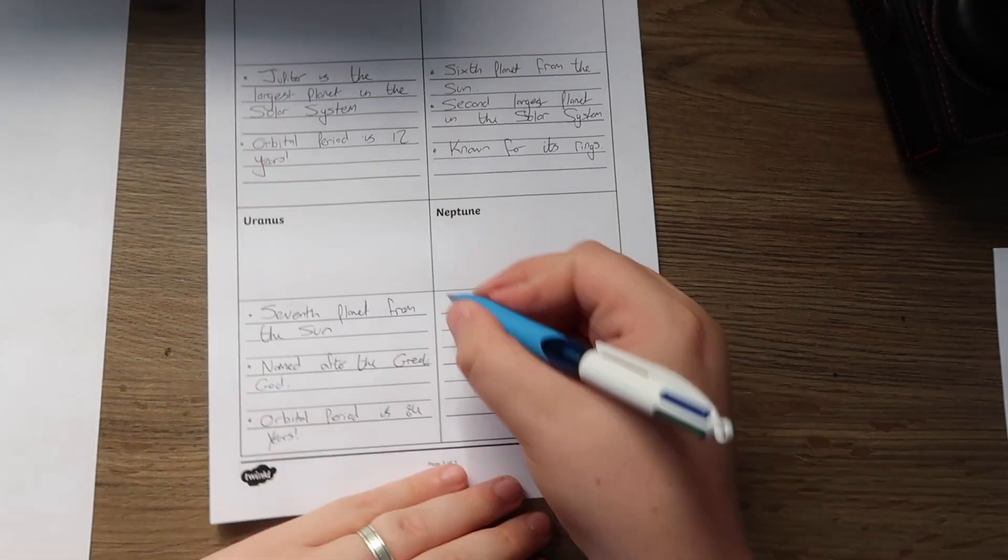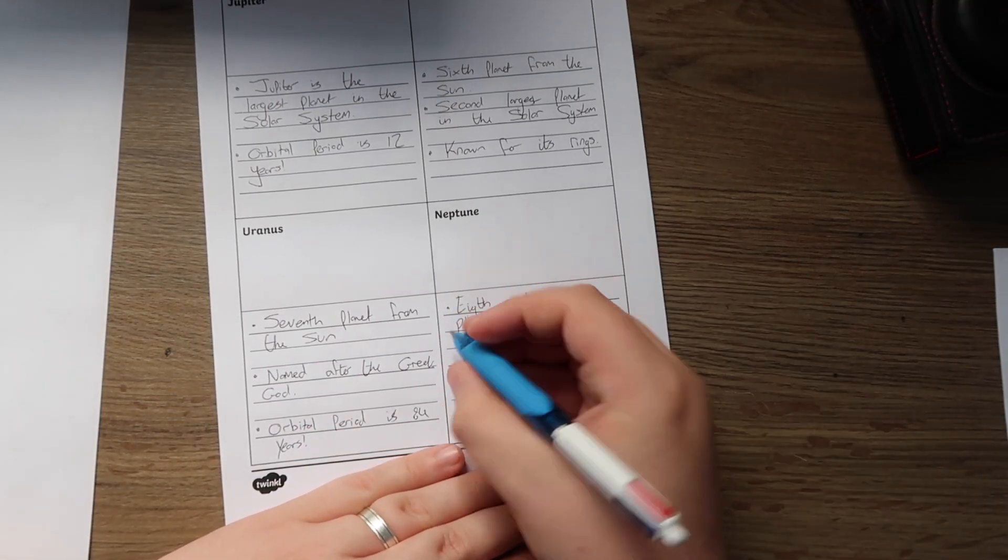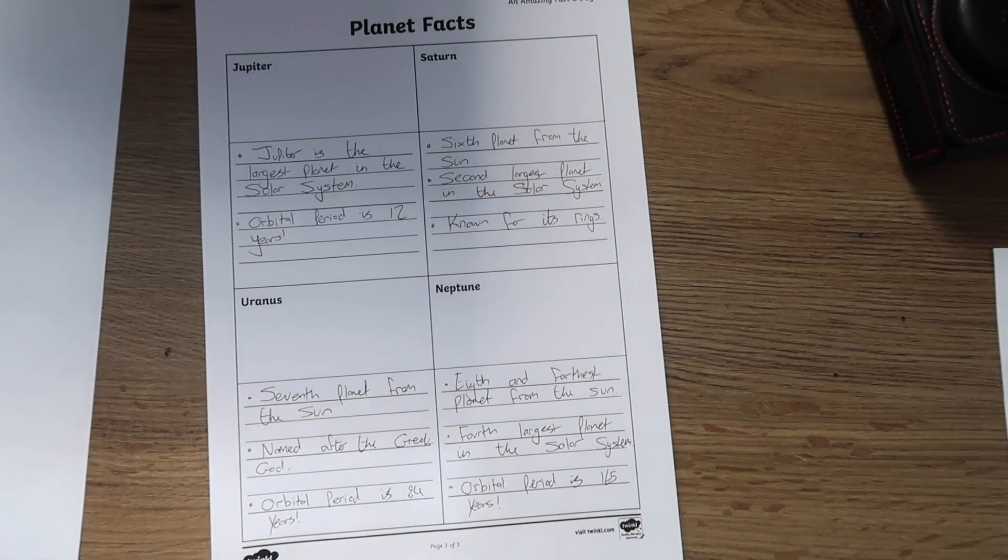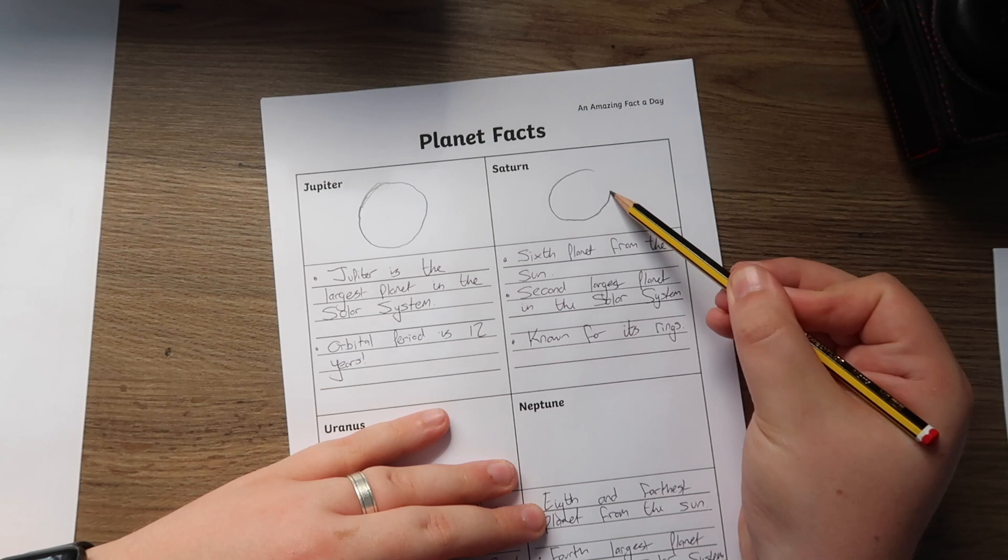Alternatively, they could be a great way for children to make notes whilst researching each planet before then creating their own non-chronological reports either in their books or on the computer.